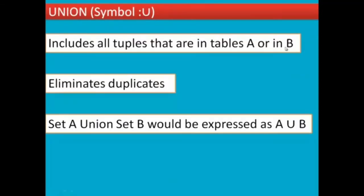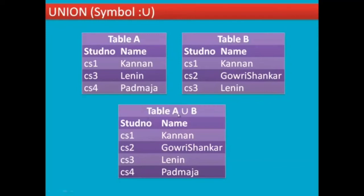Next is UNION. Union includes all the tuples that are in table A or B. If we select that, we will eliminate duplicate data. Set A union set B is expressed as A union B. For example, table A union B, we merge them: CS1, CS2, Gowri, CS4. Duplicate data is eliminated after merging.